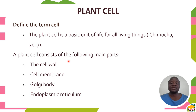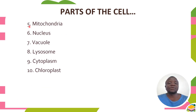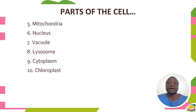A plant cell has got different parts. Remember, in Form 1 you looked at the differences between an animal cell and a plant cell, but here we are going to dwell very much on the plant cell. The plant cell consists of several parts: the cell wall, the cell membrane, the Golgi body, endoplasmic reticulum, mitochondria, nucleus, vacuole, ribosome, cytoplasm, and chloroplasts. These are some of the parts of the plant cell.